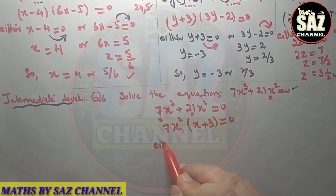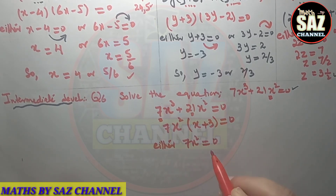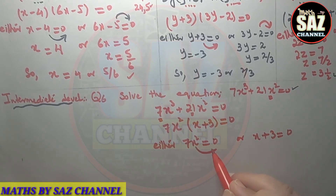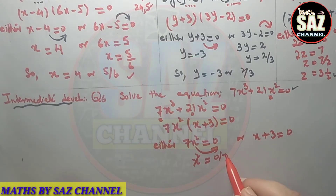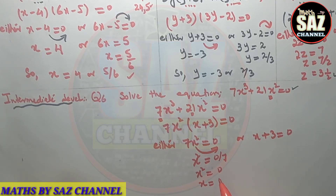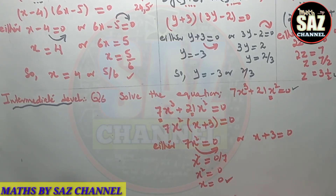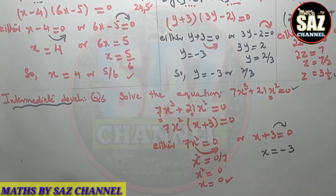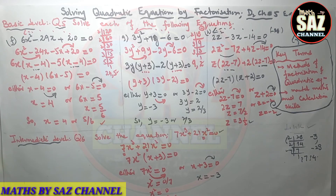Apply either-or condition: either 7x² = 0 or x + 3 = 0. From 7x² = 0, divide by 7 to get x² = 0, and taking the square root of both sides gives x = 0. From x + 3 = 0, shift 3 to the other side: x = -3. The two solutions are x = 0 or x = -3. I hope you are clear about all these questions.